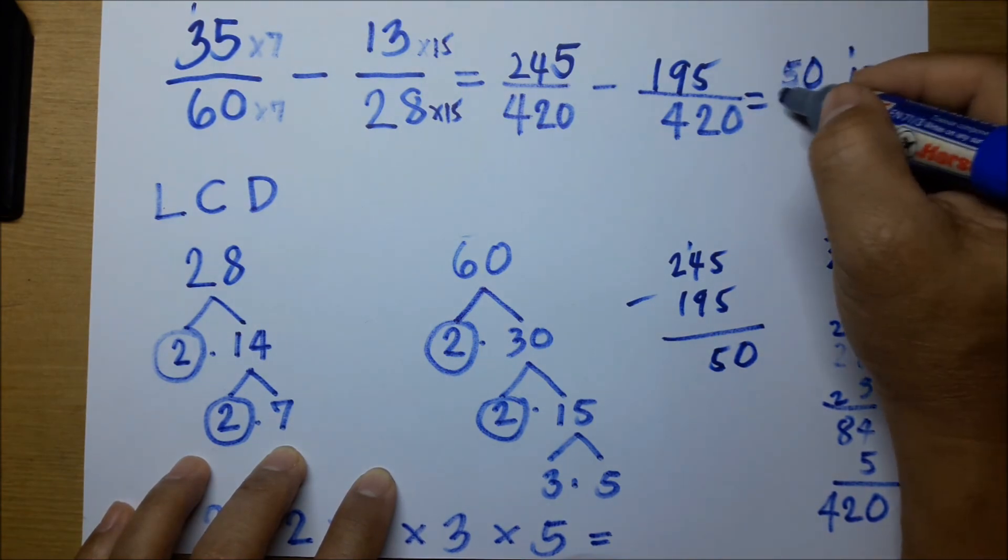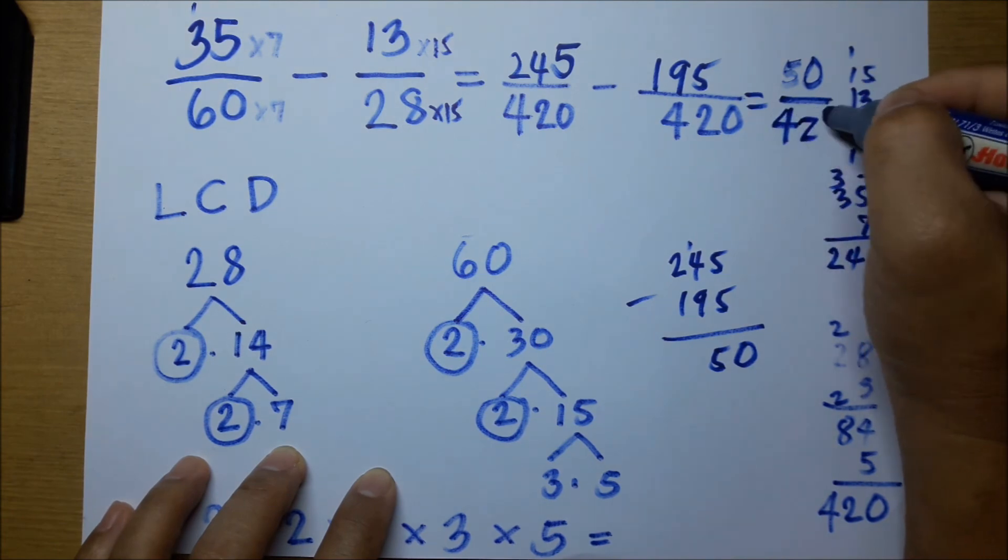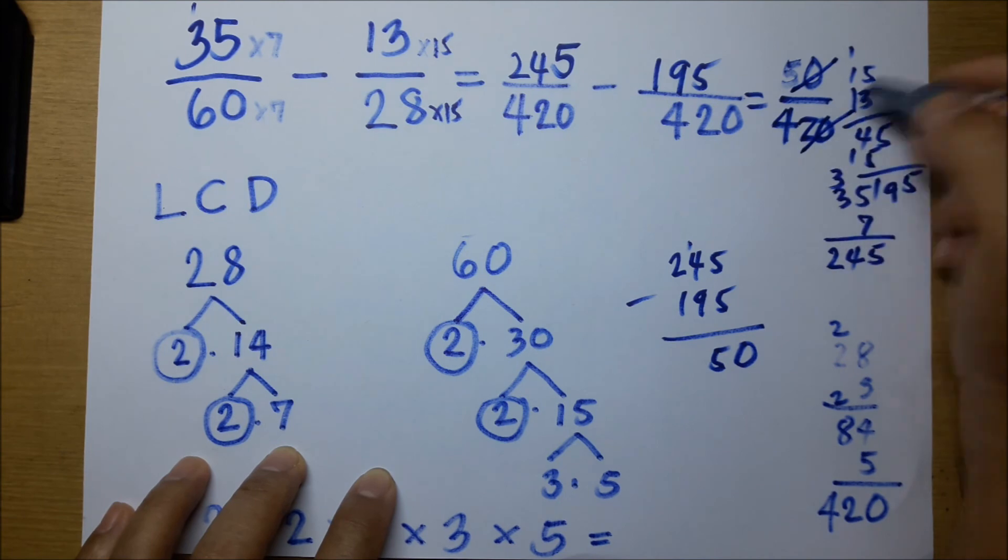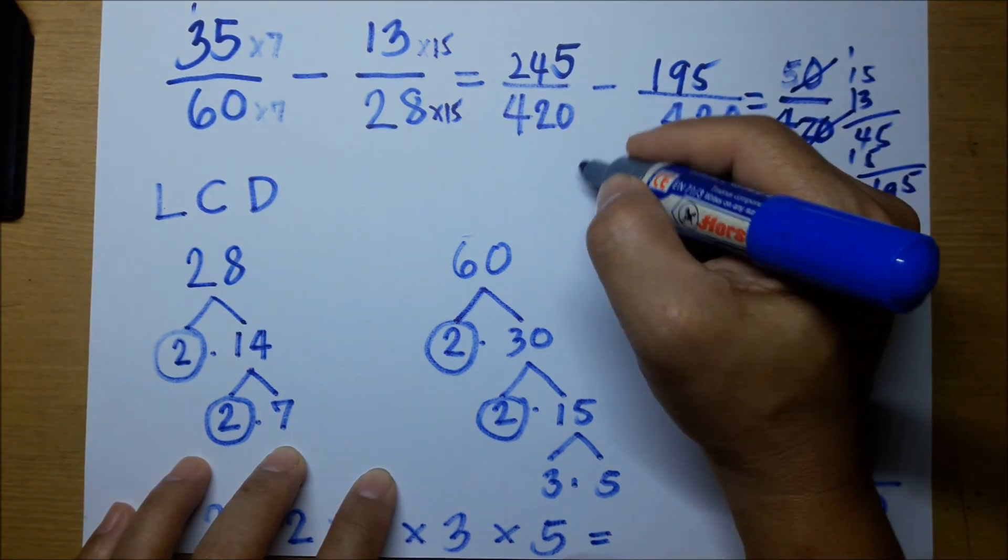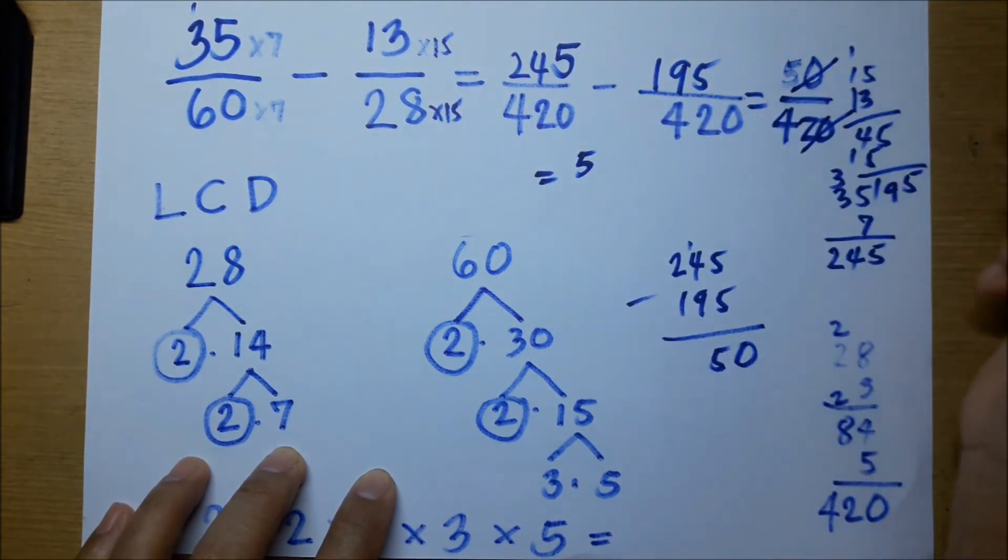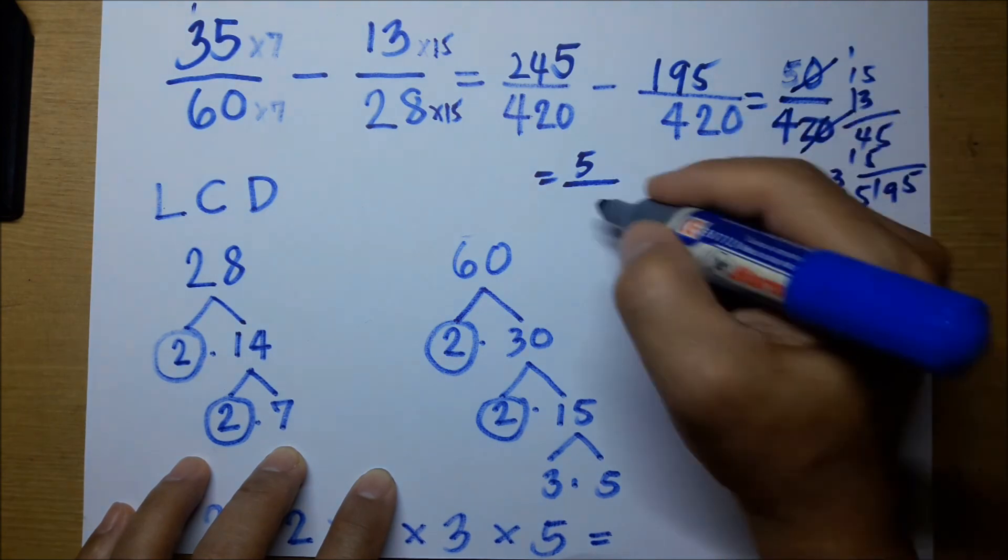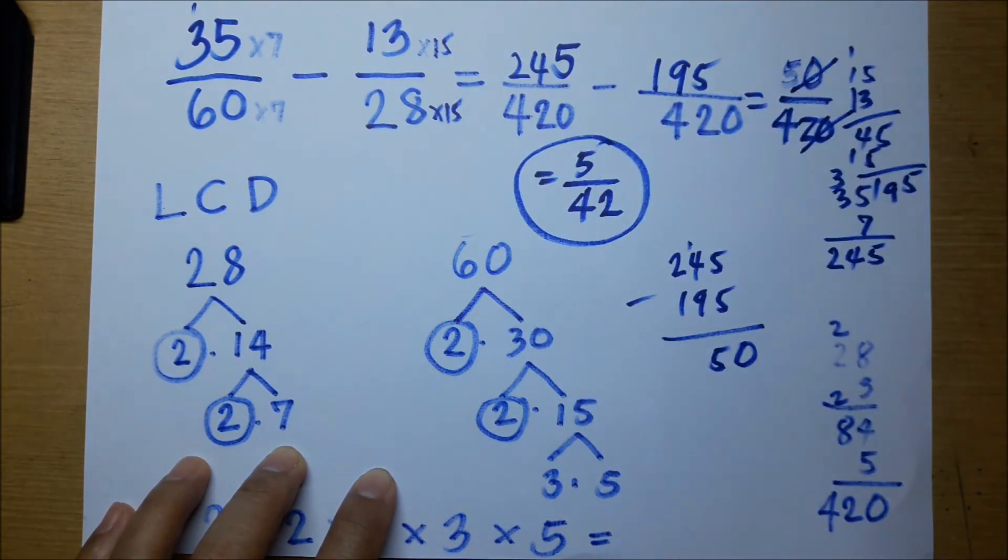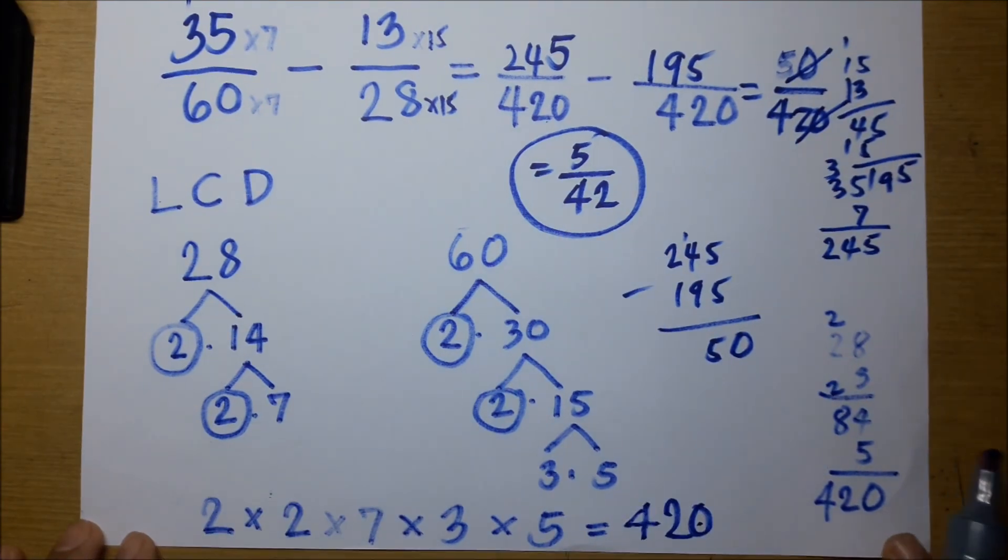Cancelling the zeros there equals 5 over 42. This is now our answer. Thank you very much for watching.